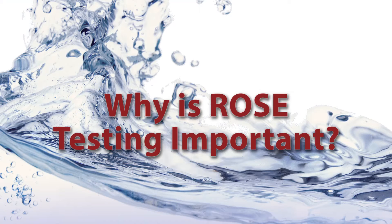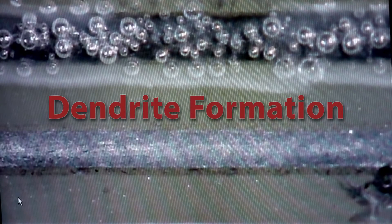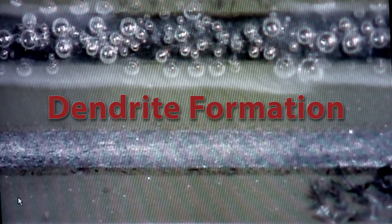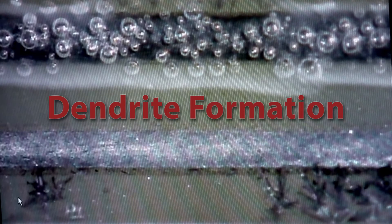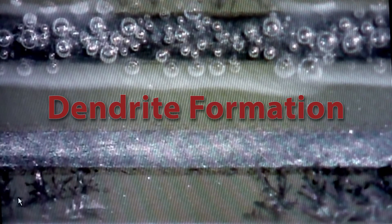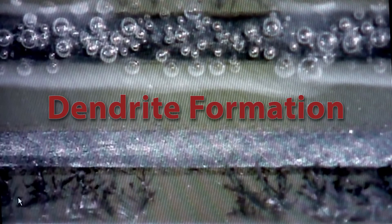Why is ROSE testing important? Why do we want to do it? These ionic contaminants are bad for a circuit board. They crawl around, get mixed with water, and cause chemical reactions to occur. Especially in the presence of a voltage bias, they will form what's called a dendrite — which is essentially a direct short on your circuit board, and that will cause circuit board failure.